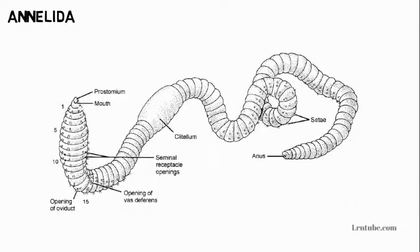Annelida: They have internal and external body segments. Their body is long and cylindrical. They have a body cavity or coelom. Some are aquatic while others are terrestrial. The alimentary canal has two openings: a mouth and an anus. Some annelids reproduce sexually and many others are hermaphrodites. Their bodies are made up of three thick layers. Examples: earthworms, leeches, and tube worms.